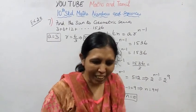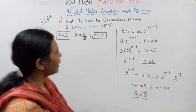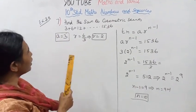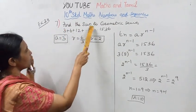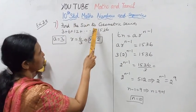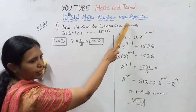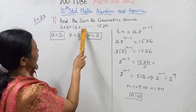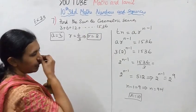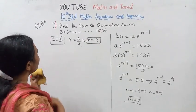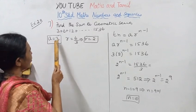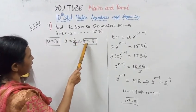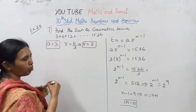Hello students, welcome to Max and Damit channel. This is Exercise 2.8, part of the governing among — find the sum of a geometric series. The series is 3 + 6 + 12 + ... up to 1536. First attempt: a equals 3, r equals 6/3 equals 2.